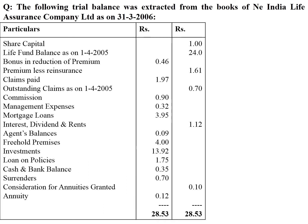First we start from share capital, which goes under the head of share capital (SC). Life fund balance as on 1st April 2005 goes under reserve and surplus (RS). Bonus in reduction of premium goes under benefits paid (BP). Premium less reinsurance goes under premium. Claims paid goes under benefit paid (BP). Outstanding expenses as on 1st April 2005 also goes under benefit paid.